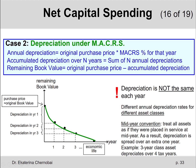There's something called the mid-year convention, which means that all assets are treated as if they're placed in service at mid-year — not January 1st, but sometime on average, let's say in June. This means that if it's a three-year class asset, the three-year economic life will cover four calendar years, at least partially.